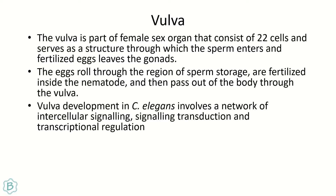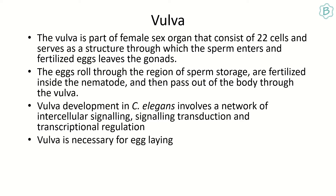Vulva development in C. elegans involves a network of intercellular signaling — not intracellular — signaling transduction, and transcriptional regulation. Intracellular means within a single cell, while intercellular refers to communication between two different types of cells within the same organism. The vulva is necessary for egg laying.